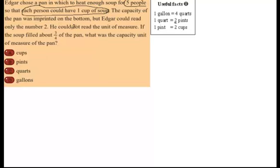The capacity of the pan was imprinted on the bottom, but Edgar could read only the number two. He could not read the unit of measurement, so he does not know that. That's going to be a question mark for the unit of measurement. Then the soup goes three-fourths of the way up the pan. Underline our question: what was the capacity unit of measure of the pan?